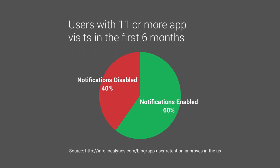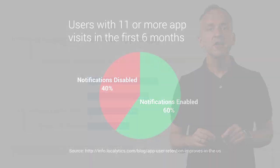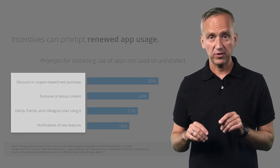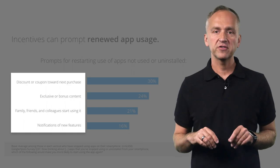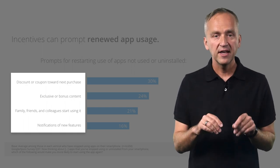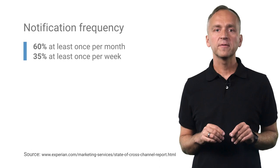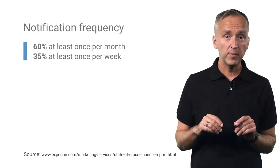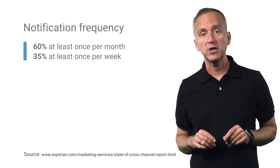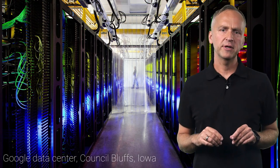According to Localytics, app users with notifications enabled use the app more often than users with notifications disabled. This begs two questions: how often can you pop a notification, and how do you implement notifications? First, pick the right frequency — make sure your notifications are relevant and targeted. Marketers from leading brands send notifications somewhere between one per month to one per week. Secondly, use a reliable cloud infrastructure so your messages don't get lost in transit.